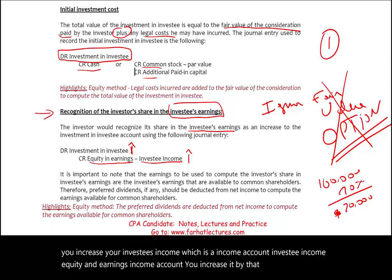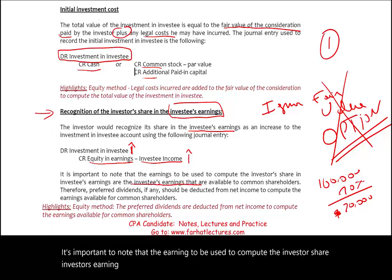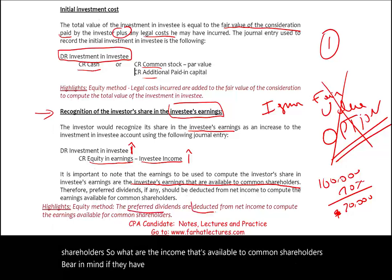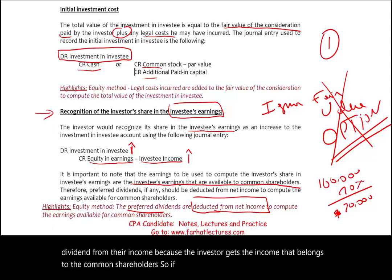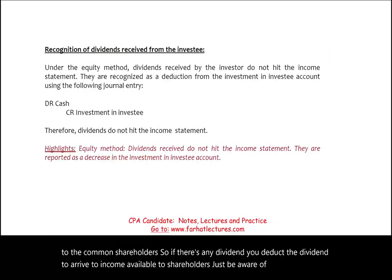Be aware that if the investee has preferred dividends, you deduct those from their income to arrive at income available to common shareholders. This is a small but important detail — the investor's share is based on income available to common shareholders, not total net income. Just be aware of this in case you see a multiple choice question on it.